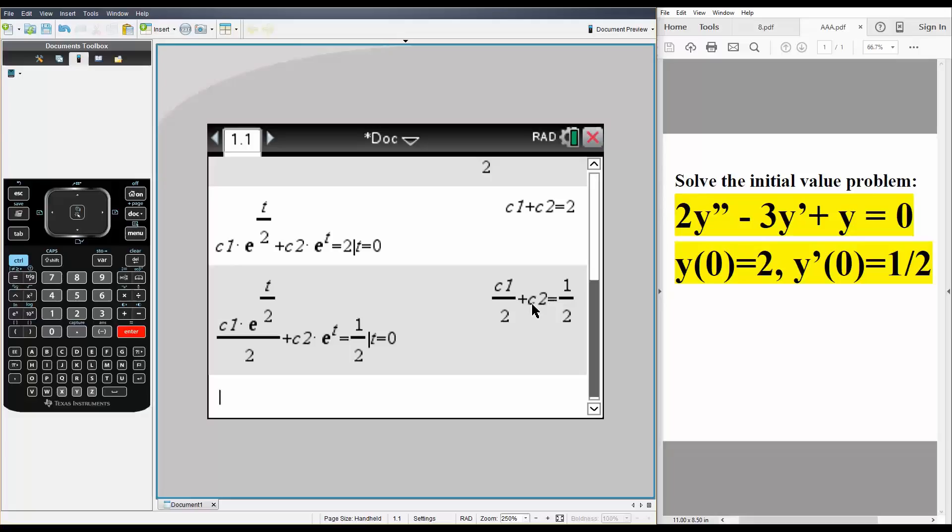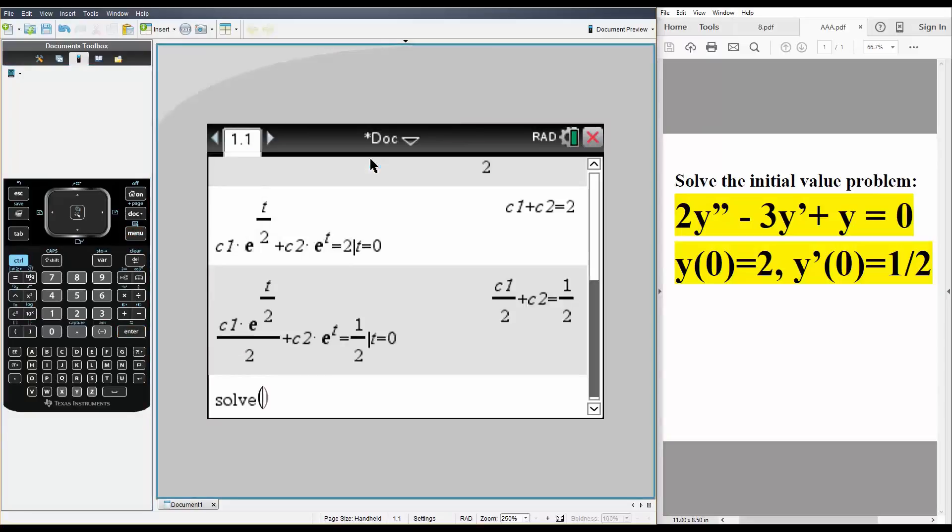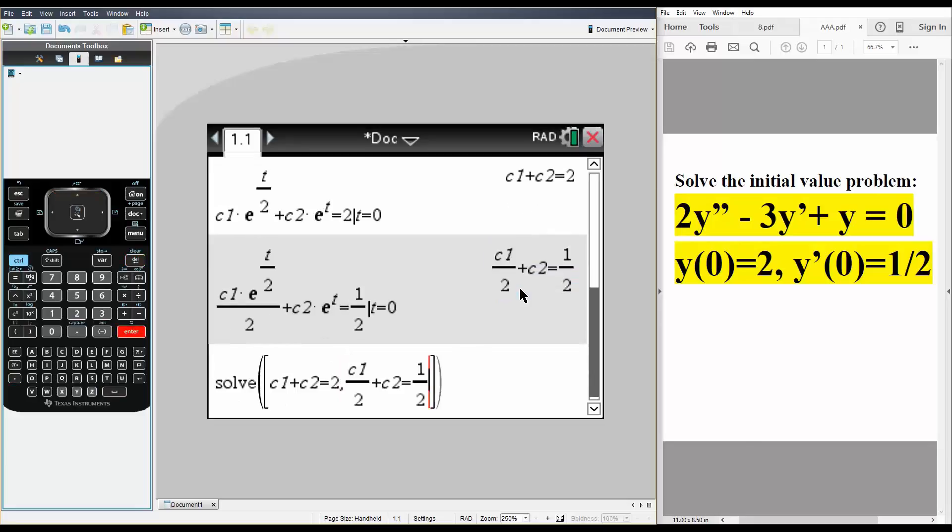And next we want to solve the equations to get c1 and c2. We'll hit menu, algebra, solve. We will do ctrl square brackets and we're just going to select these two. So we scroll up we select it, comma, we scroll up select it. And on the outside we write comma c1 comma c2 like this, hit enter.